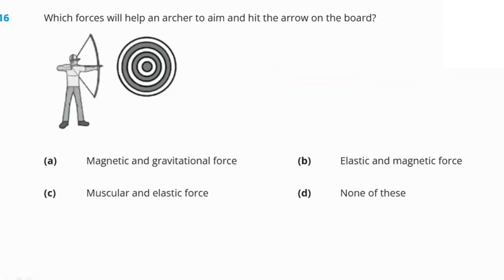Which forces help an archer aim and hit an arrow on the board? The muscular force of the person and the elastic force of the bow are both acting. Option C — muscular force and elastic force — is the right answer.